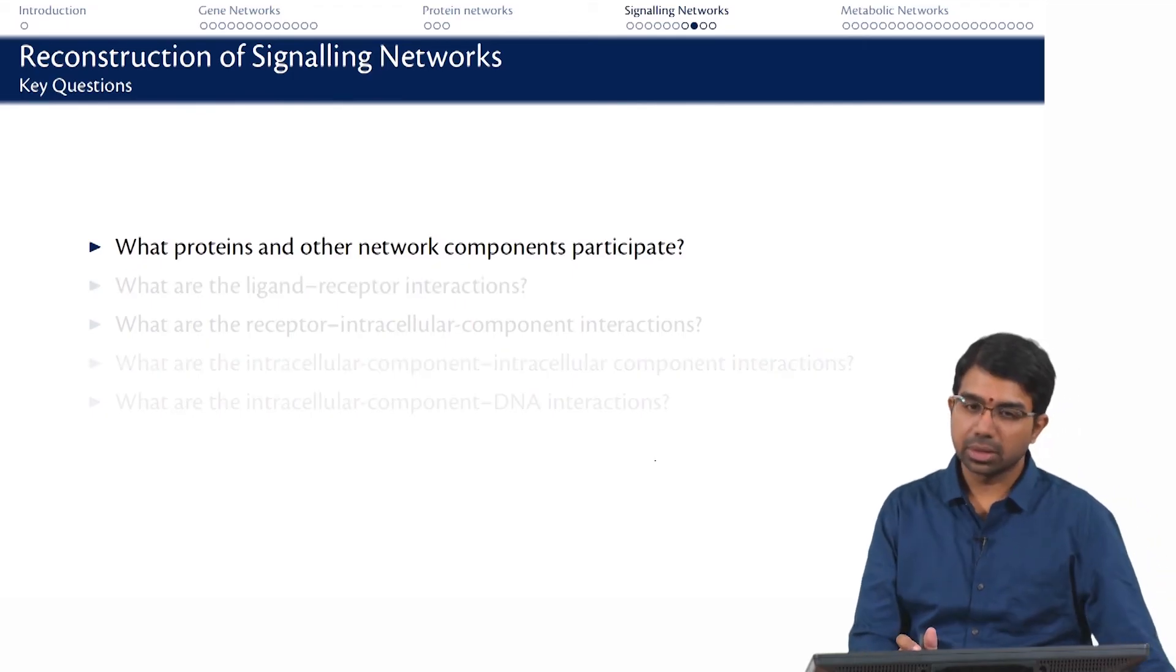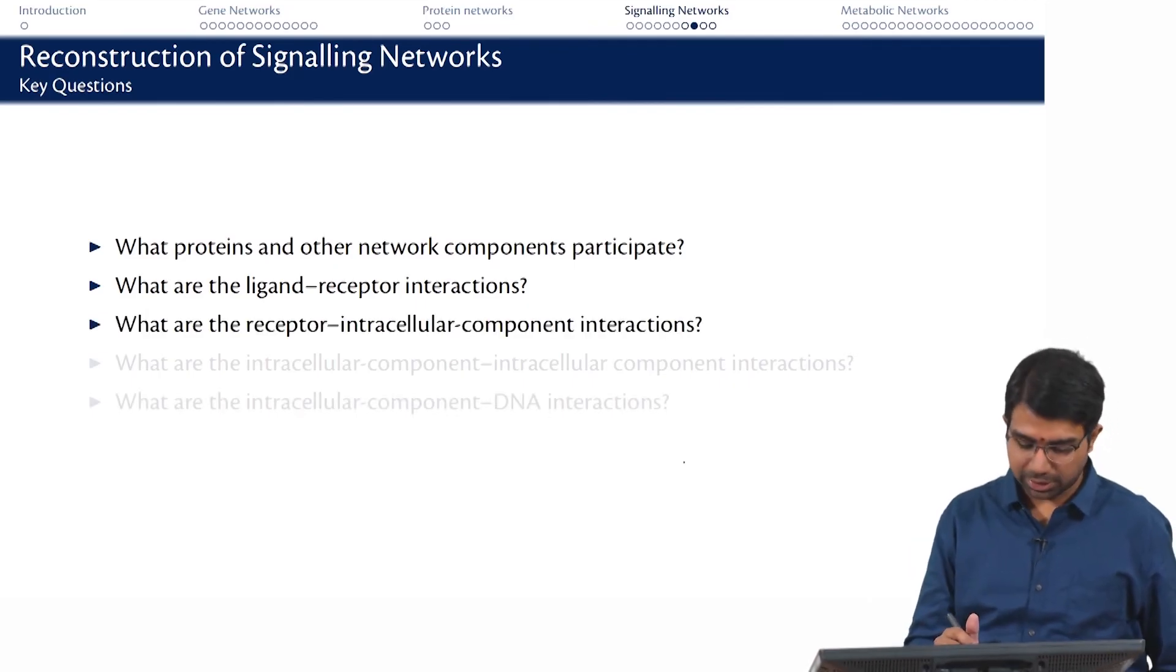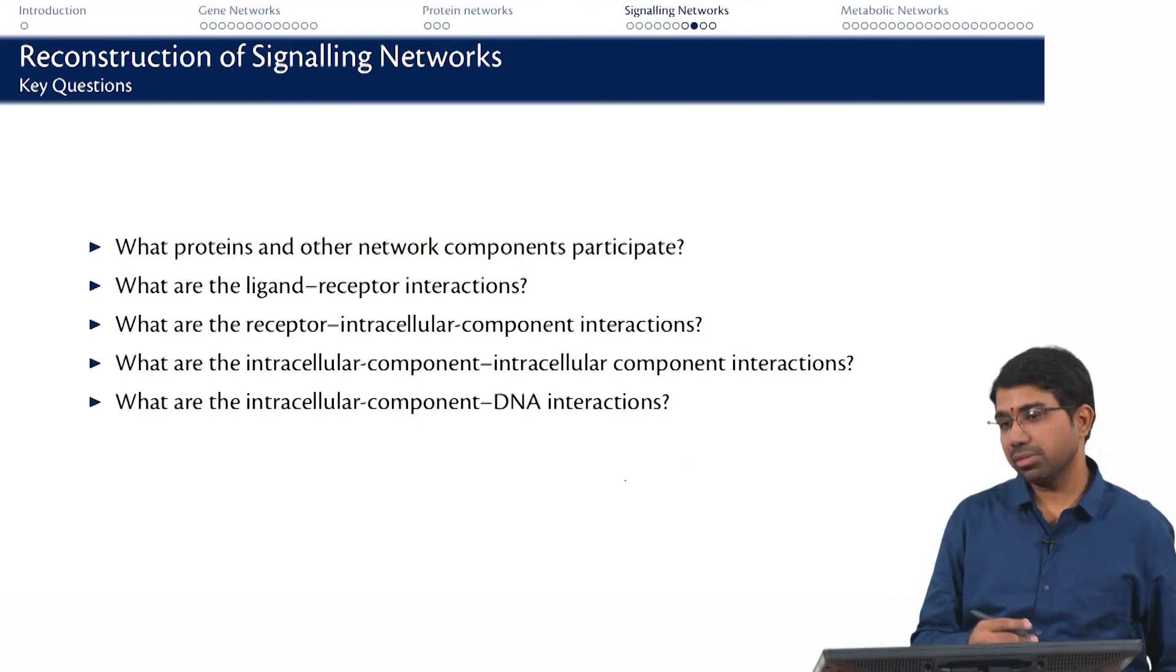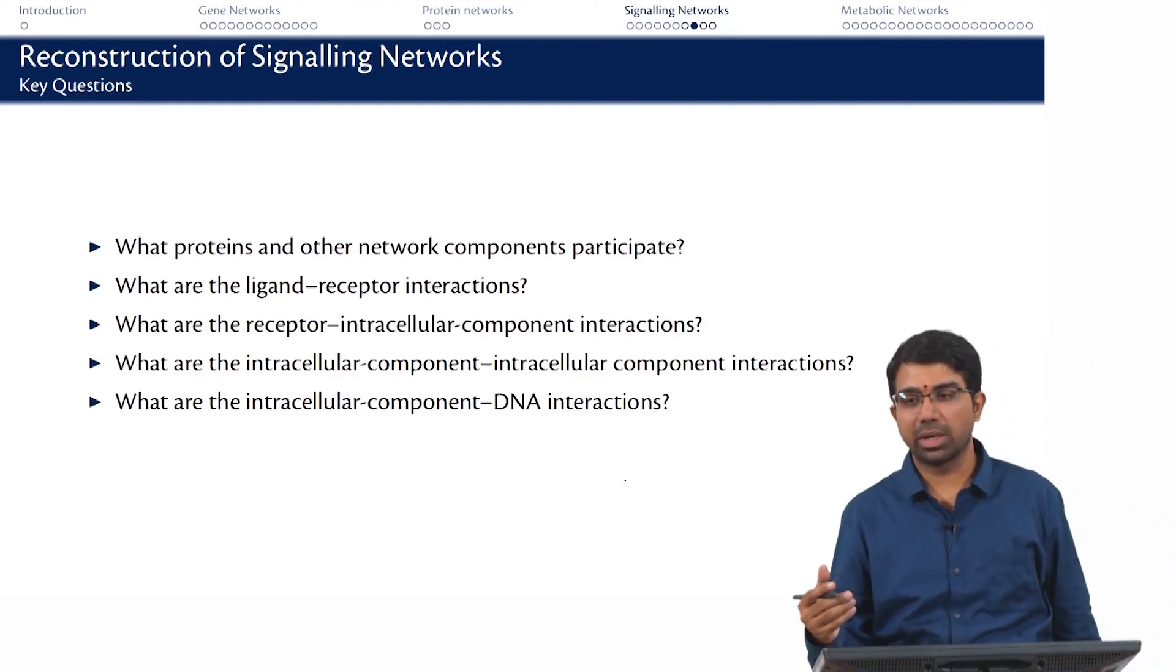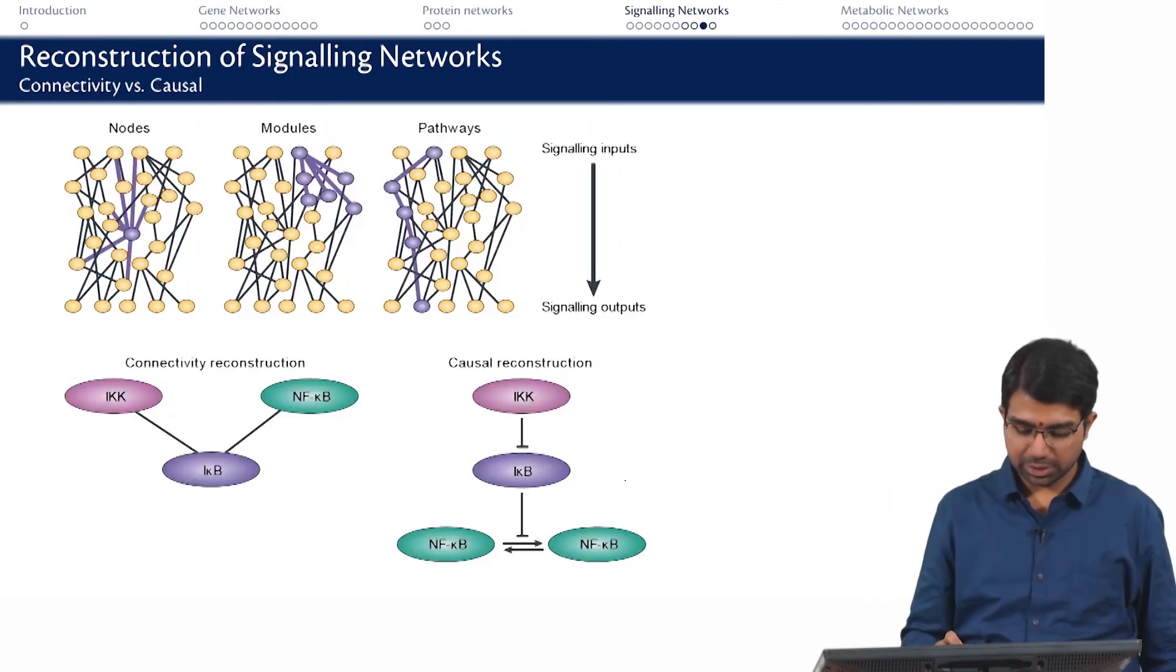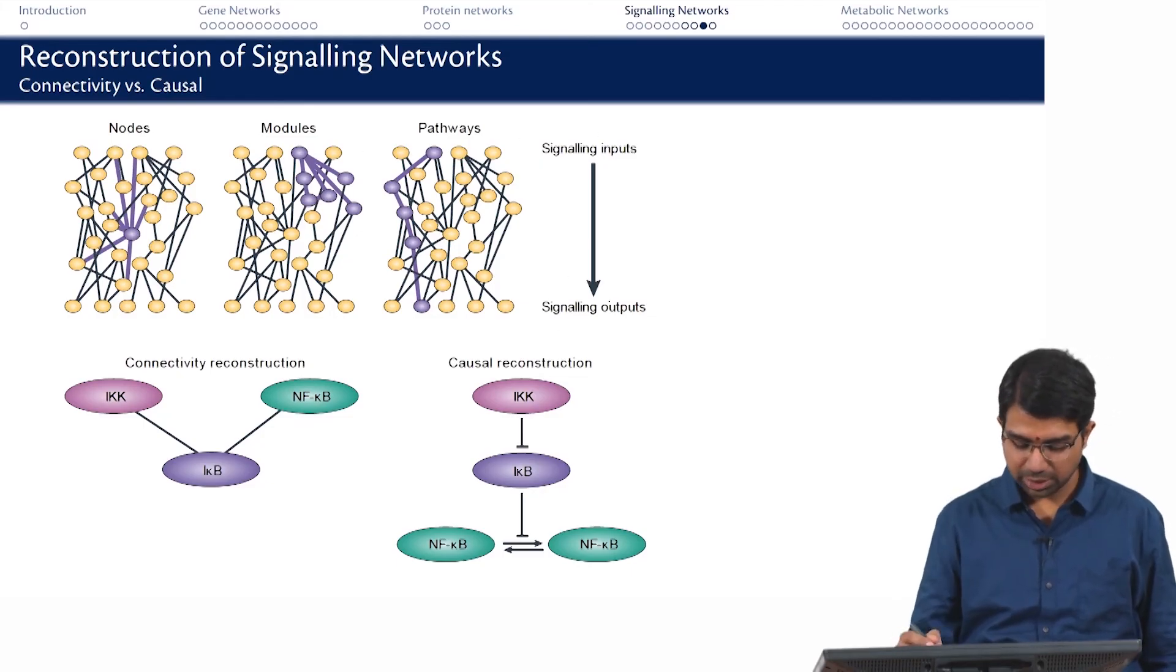The next thing you need to worry about are what are the ligand-receptor interactions. You may have cAMP which is a ligand which will go and bind to some receptor. Or what are the receptor intracellular component interactions? What are the intracellular component interactions? And finally, maybe DNA is involved. You have a transcription factor that is prevented from binding somewhere or made to bind, a repressor is made to bind to the DNA. So you have nodes, then modules organized into pathways which basically translate the signaling inputs to some signaling outputs.